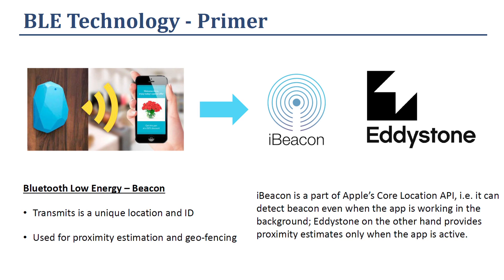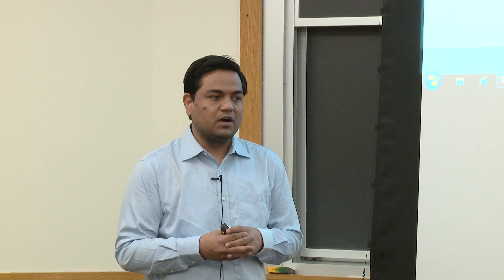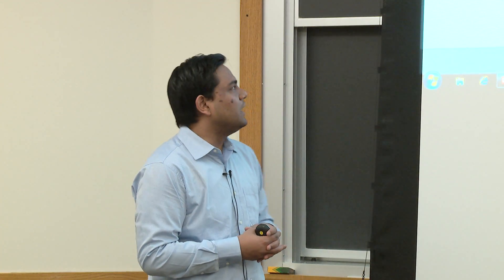BLE technology is Bluetooth Low Energy. What it basically does is — it's a small radio transmitter that transmits the location, both major and minor IDs. Till now we've been trying to figure out geolocation in the external sense, but when you come and do indoor mapping, this is where it's very powerful. It's essentially used for two main things: proximity estimation and geofencing.